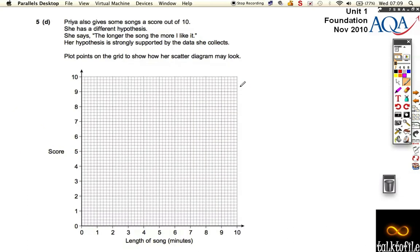This one says, Priya also gives some songs a score out of 10. She has a different hypothesis. She says, the longer the song, the more she likes it. So the further along to the right, the higher it goes up. It says, show that draw points on the scatterer are generally true.